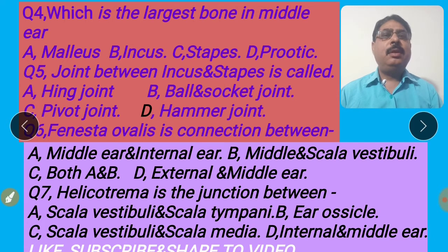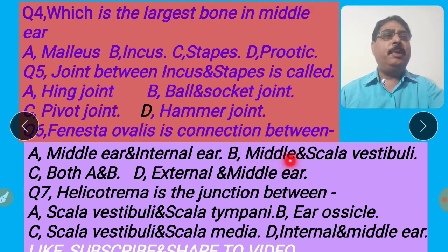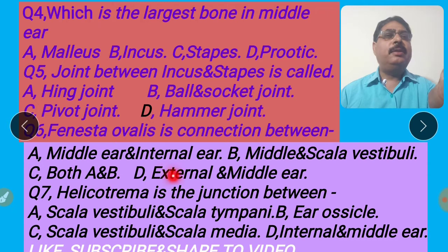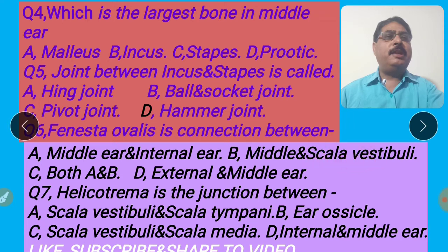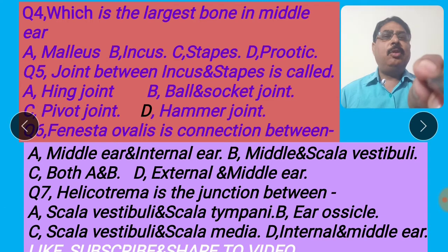Next question: Fenestra ovalis is the connection between — option A, middle ear and internal ear; option B, middle ear and scala vestibuli; option C, both A and B; option D, external and middle ear. Fenestra ovalis is the connection between the middle ear and internal ear. Scala vestibuli is a chamber present in the internal ear. So the right answer is A and B — both are right, both options given in option C. I shall click option C for the right answer.